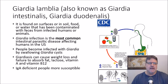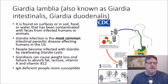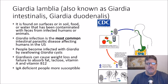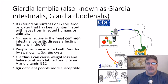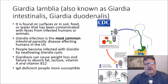The first intestinal flagellate I want to talk about is Giardia lamblia. This is something found on surfaces or in the soil, food, or water that has been contaminated with feces from infected humans or animals. Giardia is the most common intestinal parasitic disease affecting humans in the United States. People become infected with Giardia by swallowing the infective stage, which are the cysts.